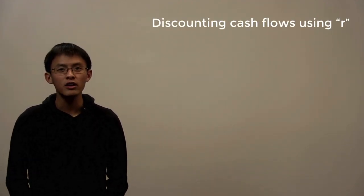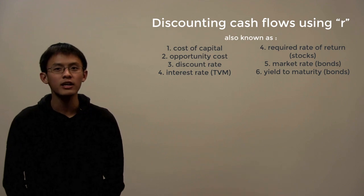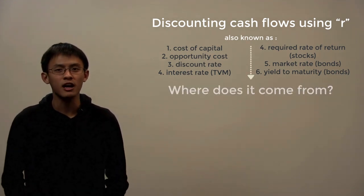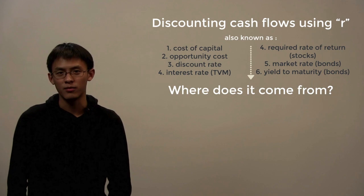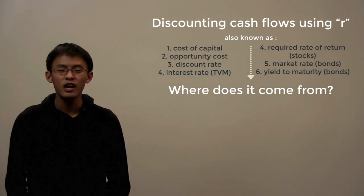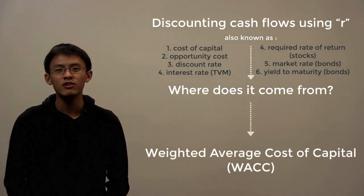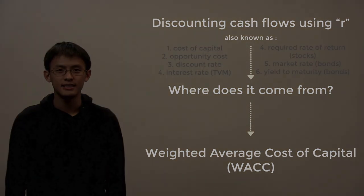Hello, and welcome to another video. Up to this point, we have discounted our cash flows using a discount rate R that is given to us. But where does this discount rate or cost of capital come from? Today, we will be discussing the weighted average cost of capital, otherwise known as WACC.